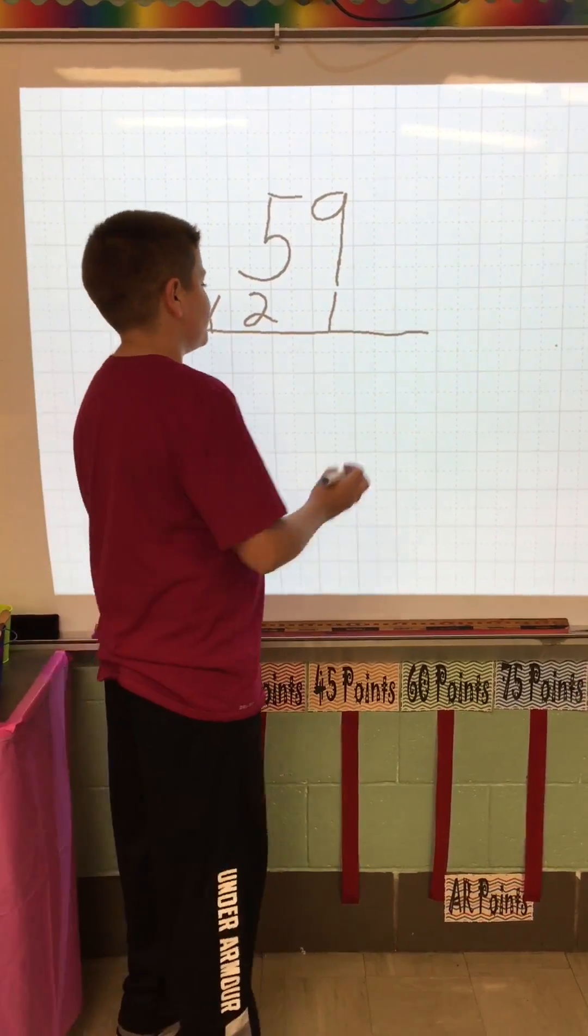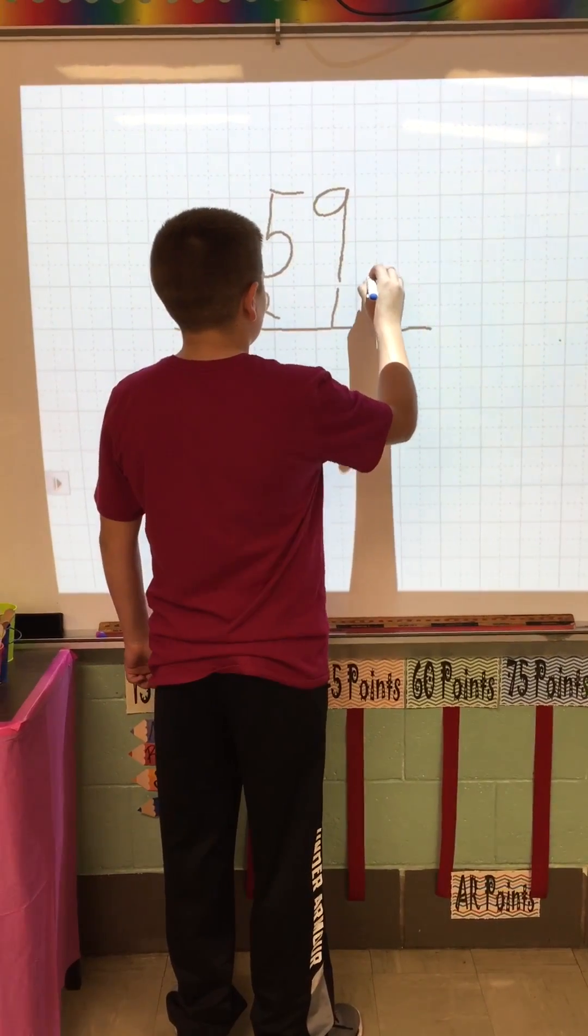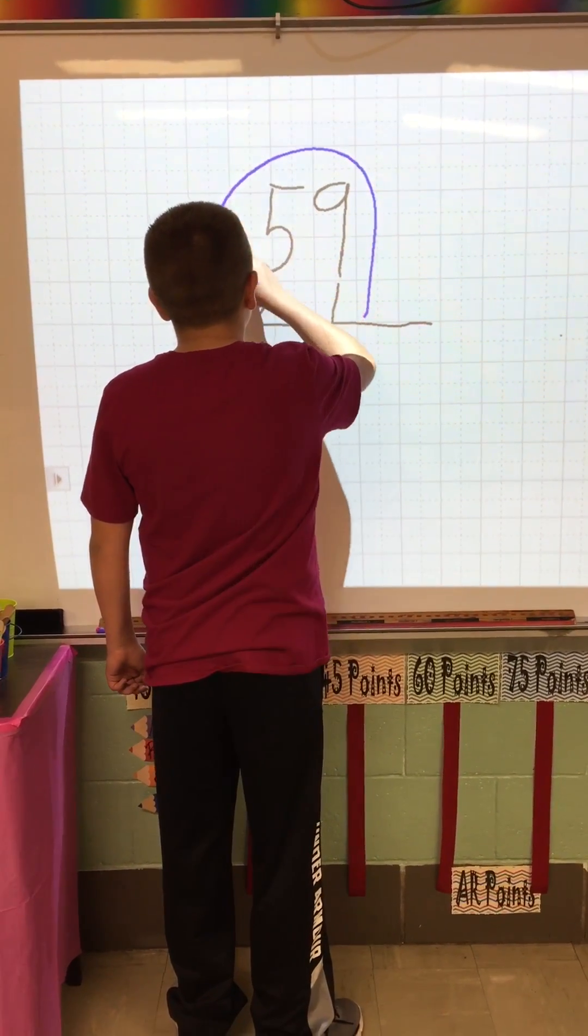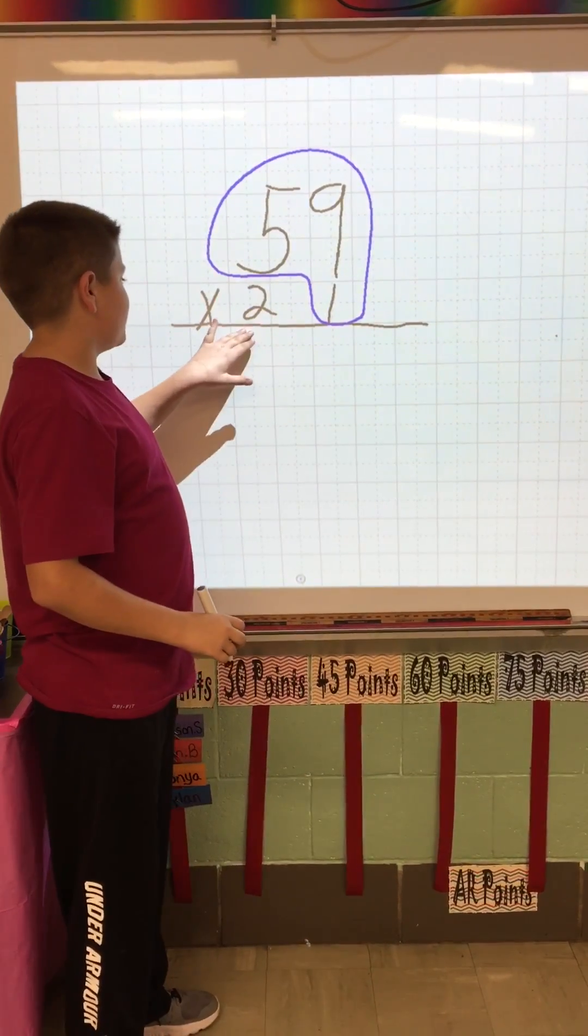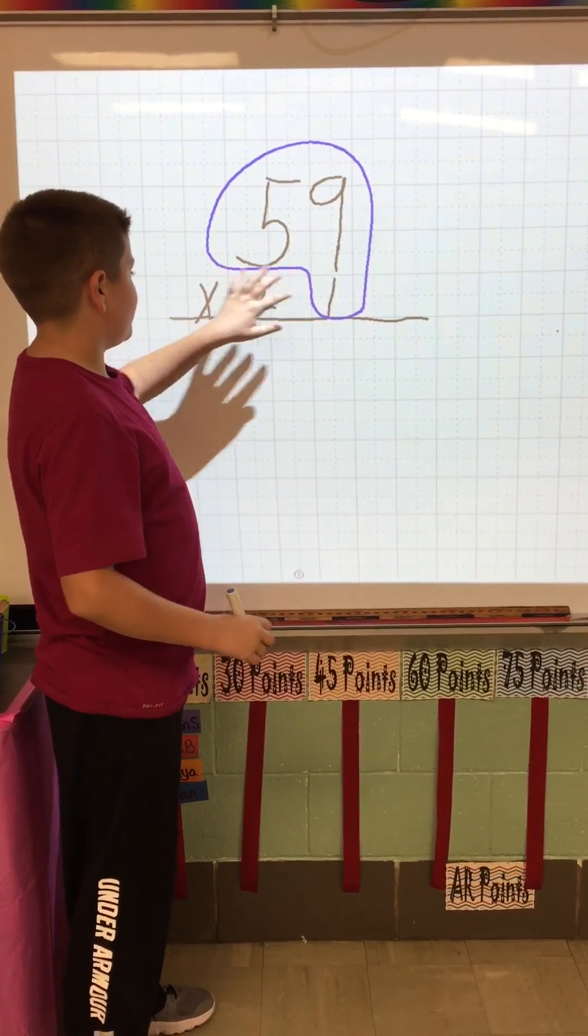So first step, you would draw a turtle head around 59 and 21. And you don't want to get the two because that's your tens. You just need to get the ones right now.